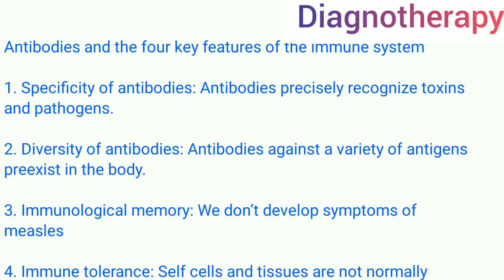Antibodies and the four key features of the immune system: First, specificity — antibodies are precisely organized against toxins and pathogens. Second, diversity — antibodies against a variety of antigens pre-exist in the body. Third, immunological memory — we don't develop symptoms of measles again because cells retain a memory of previous antigens that have entered the body. Fourth, immune tolerance — cells and tissues are not normally attacked; the cells do not attack themselves.